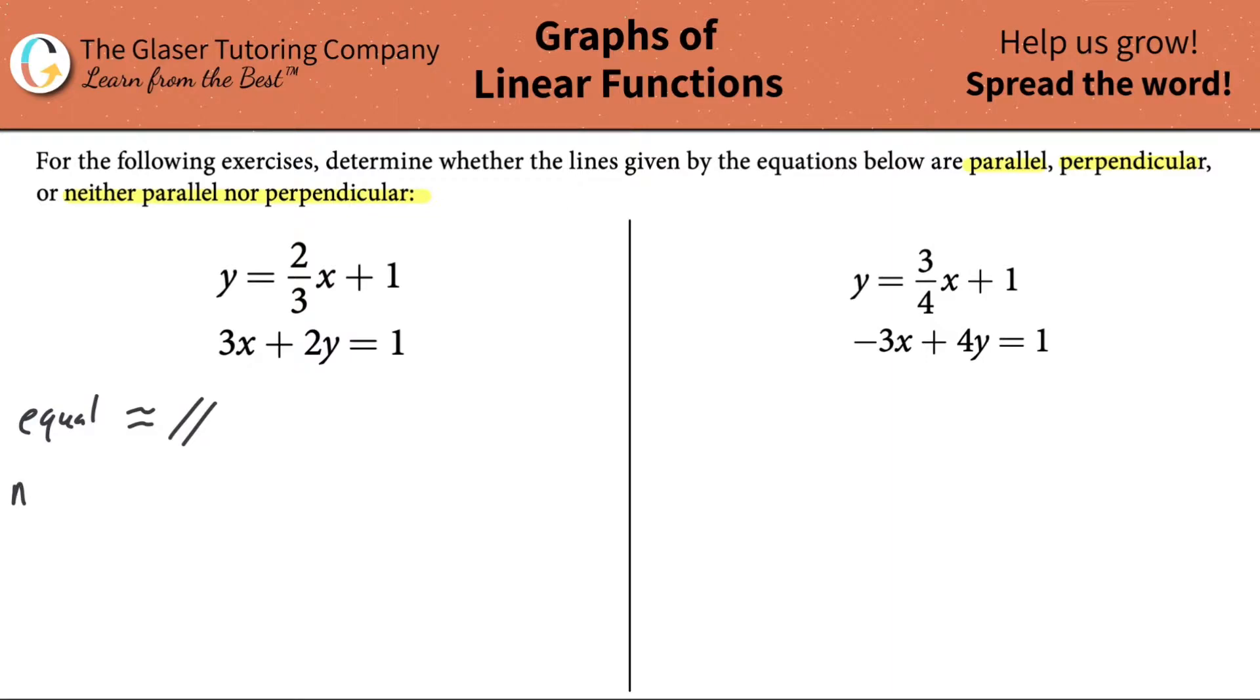When they are something called negative reciprocals, then that means the lines are perpendicular. And if the slope falls into neither one of the two categories, well then it's neither parallel nor perpendicular.